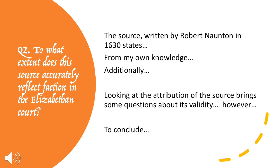So you need to have a go at answering this question: to what extent does this source accurately reflect faction in the Elizabethan court? Use this framework. First, say: 'The source written by Robert Norton in 1630 states...' and tell me what the source is about — quote from it and summarise it. Then, from your own knowledge, bring in evidence that there was a lot of faction and that Elizabeth used it.